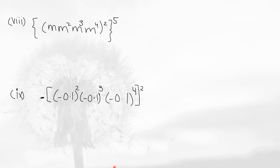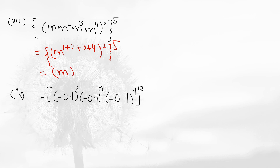The next question has all m's with no outer powers listed, so apply the law of product of powers: add the powers 1 plus 2 plus 3 plus 4 to get 10. There is a power of 2 above this, and a further outer power of 5. Applying law of power of power: 10 times 2 is 20, and 20 times 5 is 100. So m to the power 100 is your answer.